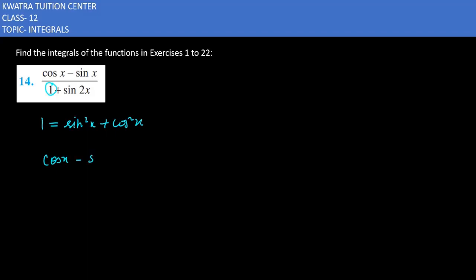Let's start with the numerator as it is. The denominator is equal to sin square x plus cos square x and sin 2x after it. Sin 2x is equal to 2 sin x cos x.